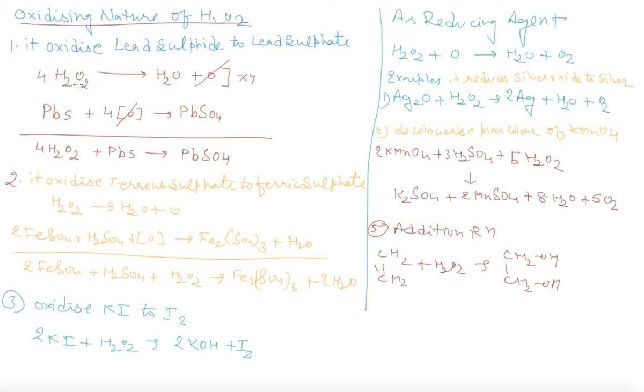H2O2 will give nascent oxygen. This reacts with lead sulfide and converts it into lead sulfate. So the final reaction is 4H2O2 plus PbS gives PbSO4.